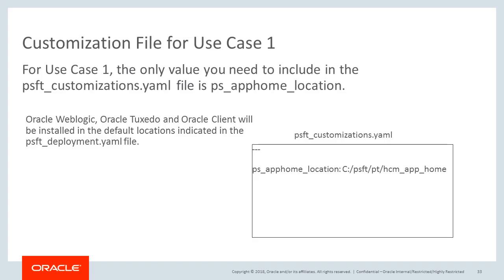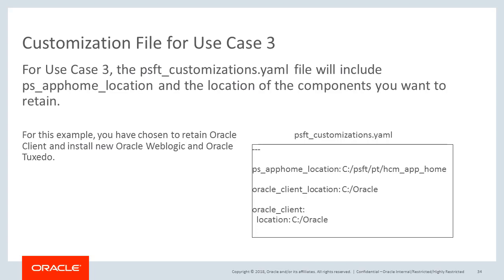If you are using use case 1, the only value you need to include in your psft-customizations.yaml file is the PS AppHome location. Oracle WebLogic, Oracle Tuxedo, and Oracle Client will be installed in the default location indicated in the psft-deployment.yaml file. If you are using use case 3, your psft-customizations.yaml file will include PS AppHome location and the components you want to retain. In this example, you have chosen to retain Oracle Client and install new Oracle WebLogic and Oracle Tuxedo. Your Oracle Client is currently installed in the Oracle directory on the C drive.